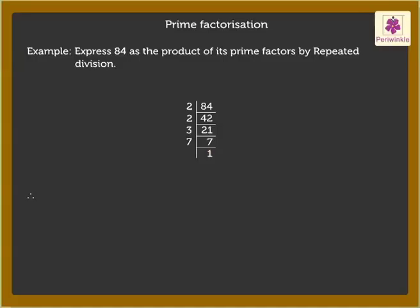Thus, the prime factorization of 84 is 2 × 2 × 3 × 7, which can also be written as 2² × 3 × 7.